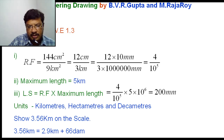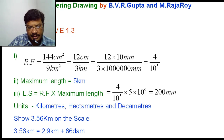The length of the scale is 200 mm. The units given in the problem to represent on the scale are kilometers, hectometers, and decameters. You are asked to show a distance of 3.56 km on the scale. 3.56 km can be written as 2.9 km plus 66 decameters, because on the Vernier scale you get decameters — the last digit is 6, so you subtract to get 2.9 plus 66 decameters.